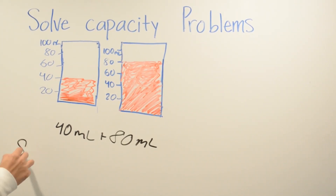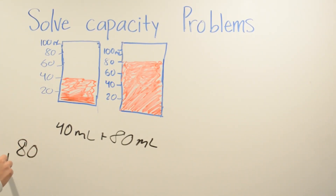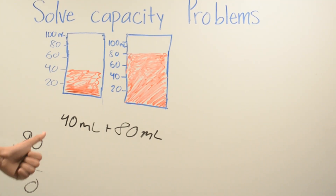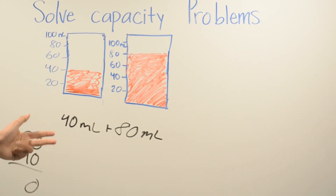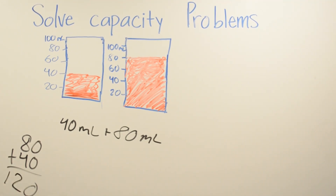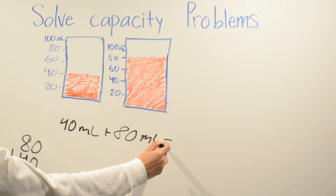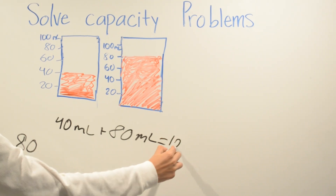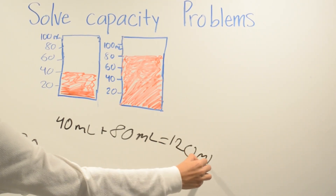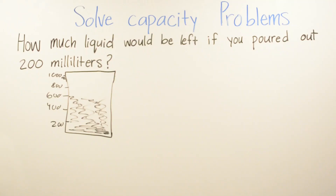So here we go into our math: 80 plus 40. 0 plus 0 is 0. 8 plus 4 is 12. So your final answer will be 120 milliliters.